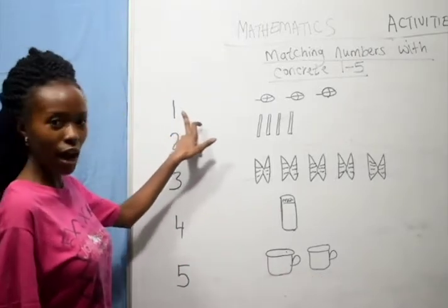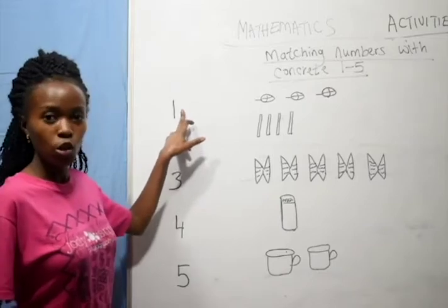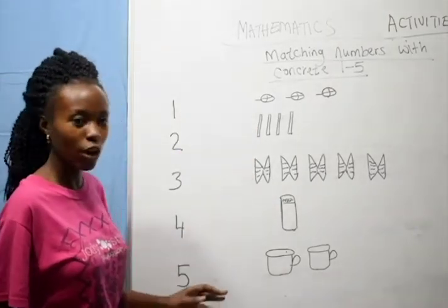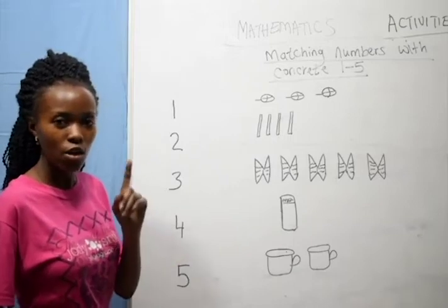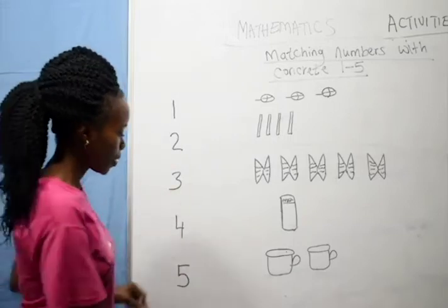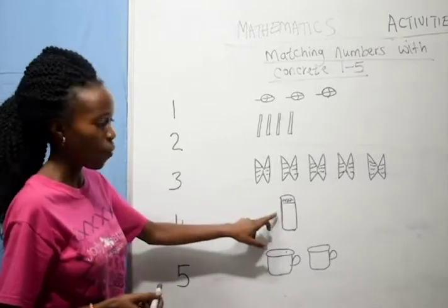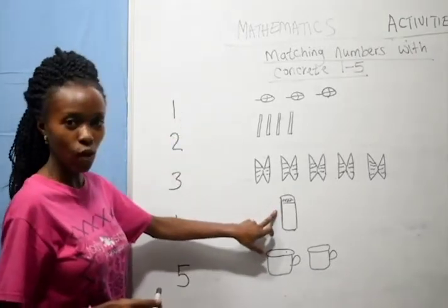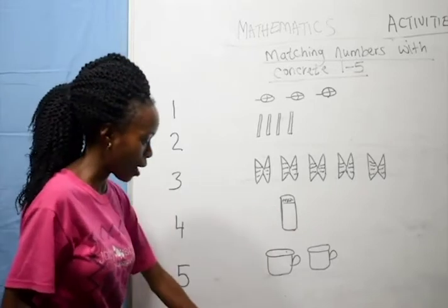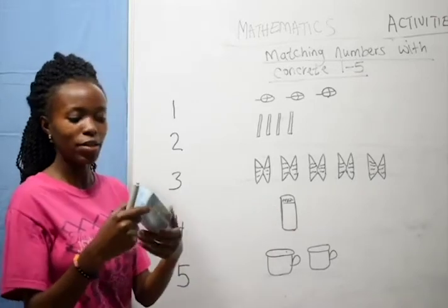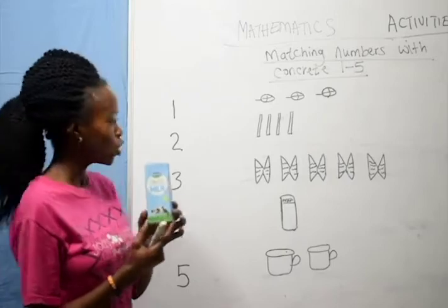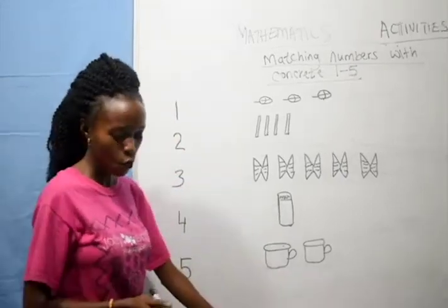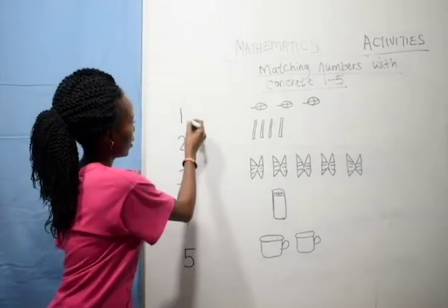If it is number 1, this is 1. You are going to come to the concrete side and look for an object which is only 1. This is number 1, and we have 1 packet of milk. So 1 is equal to 1. This is a packet of milk — number 1 and a packet of milk. So we match, like that.